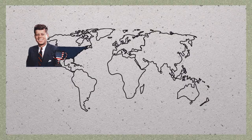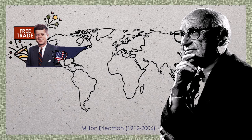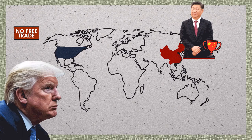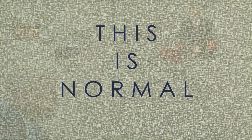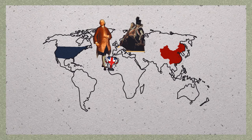Since World War II, that has been the United States, and not surprisingly, US economists have produced very sophisticated theories proving David Ricardo's 1817 theory — they were the heavyweights. Now, when China is becoming the heavyweight, the United States elected someone who was against free trade: Donald Trump. This is normal. The same thing happened when the previously most advanced countries — first Holland, then England — lost out. They also became protectionists.